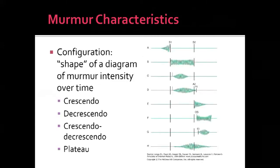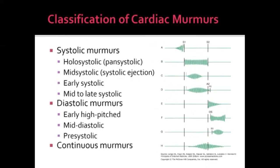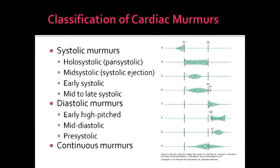The shape of the murmur is also helpful — crescendo, decrescendo, crescendo-decrescendo, or plateau. For systolic murmurs, common types include holosystolic (throughout all of systole), mid-systolic, early systolic, or mid-to-late systolic — each associated with specific valvular lesions. Diastolic murmurs may be early, mid-diastolic, or pre-systolic. Continuous murmurs are heard throughout both systolic and diastolic portions of the cardiac cycle.